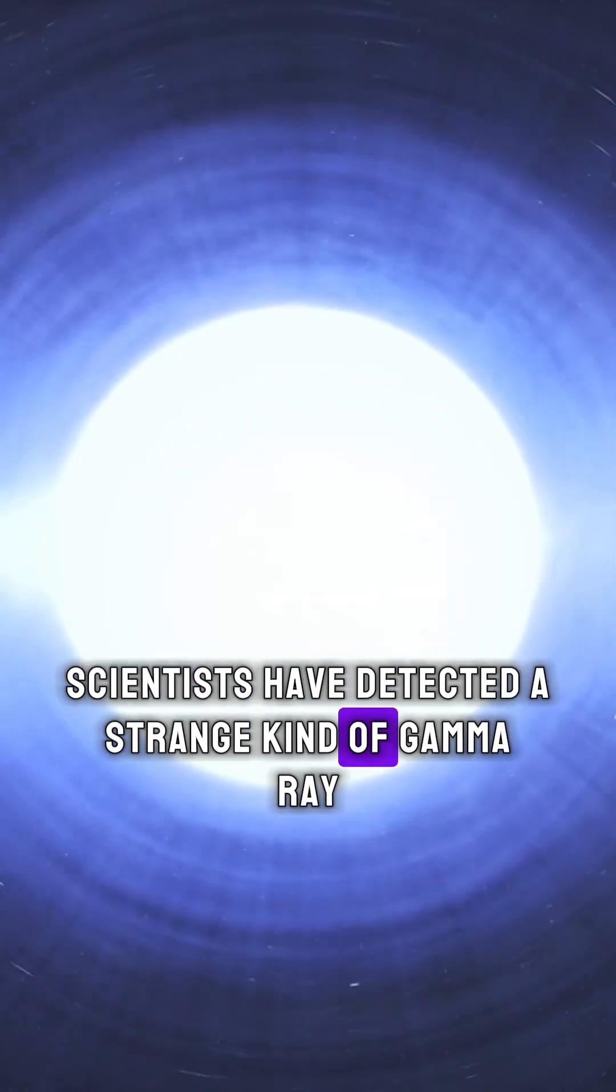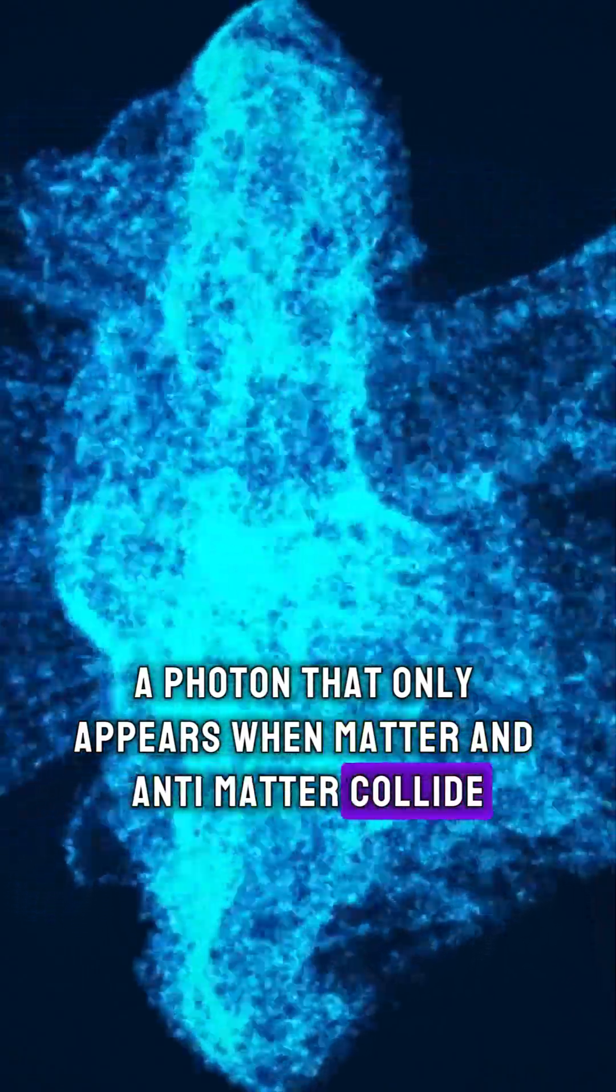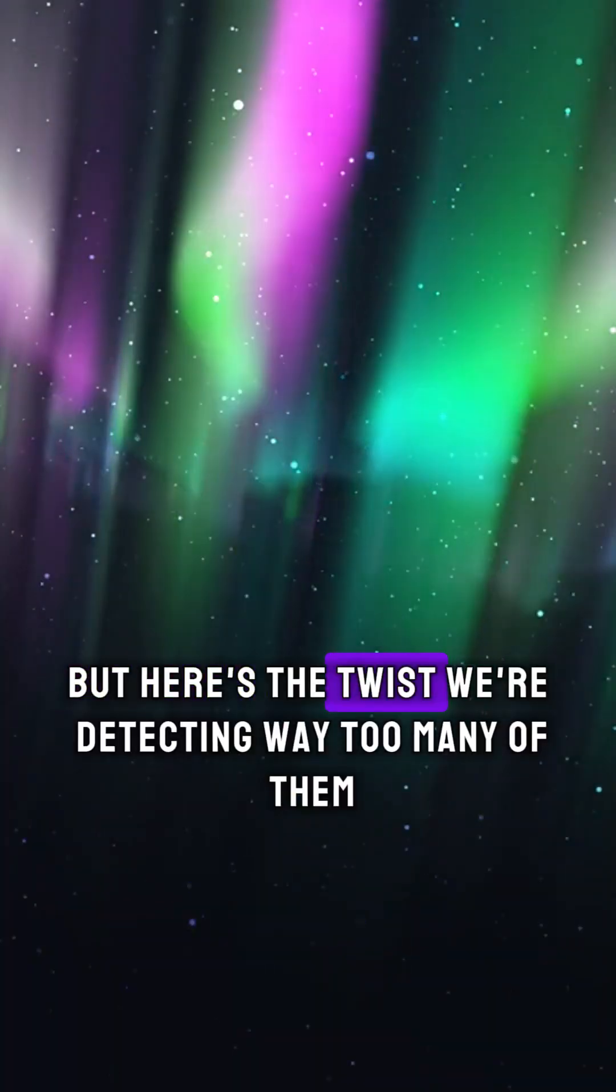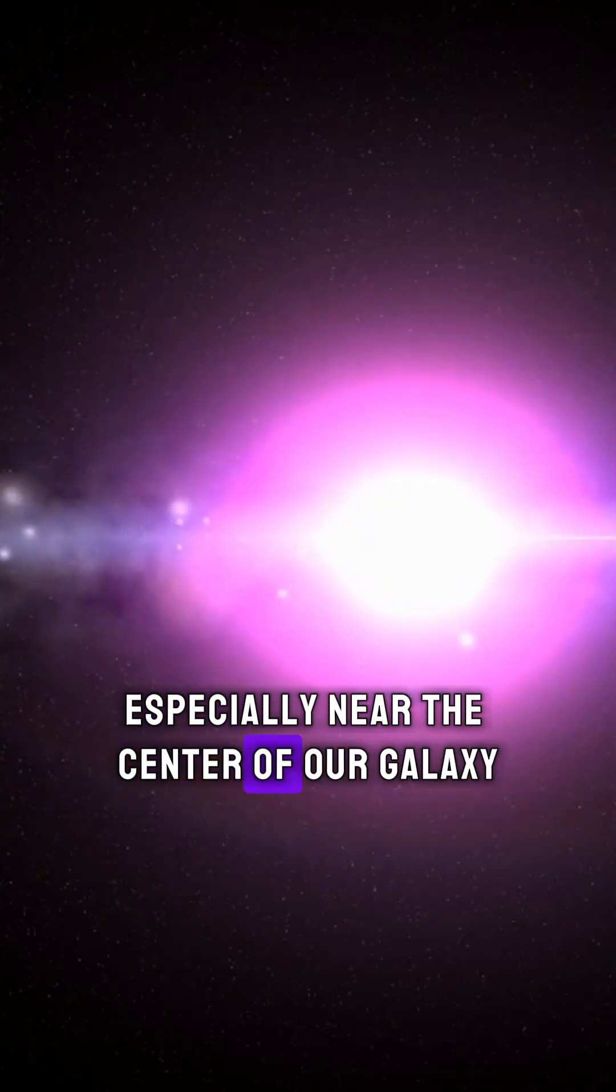Scientists have detected a strange kind of gamma ray, a photon that only appears when matter and antimatter collide. But here's the twist. We're detecting way too many of them, especially near the center of our galaxy.